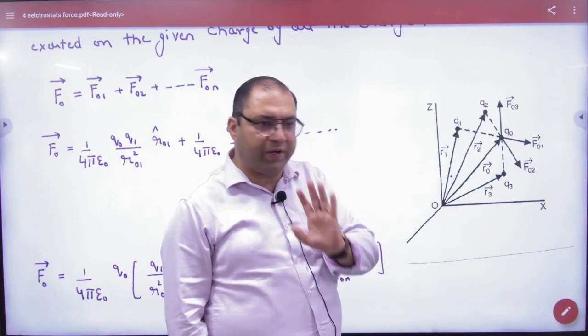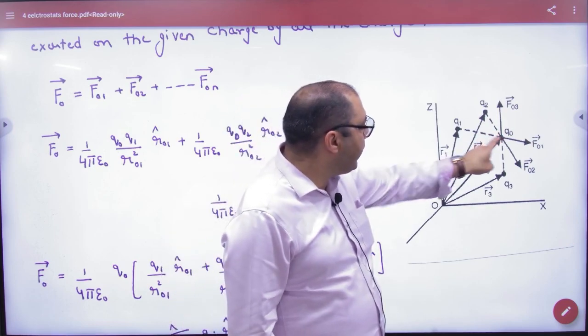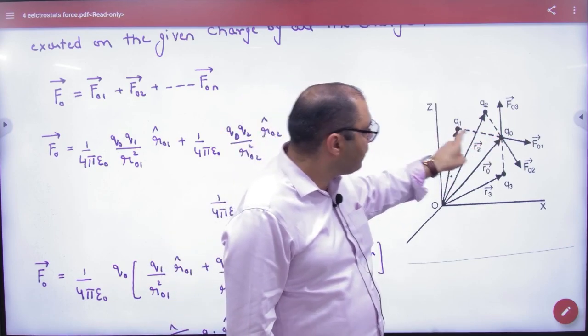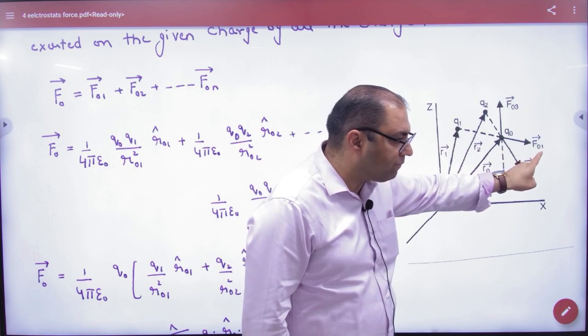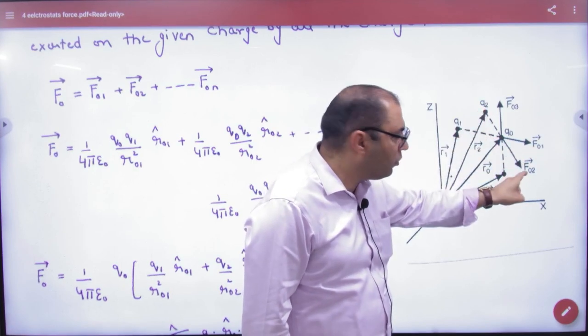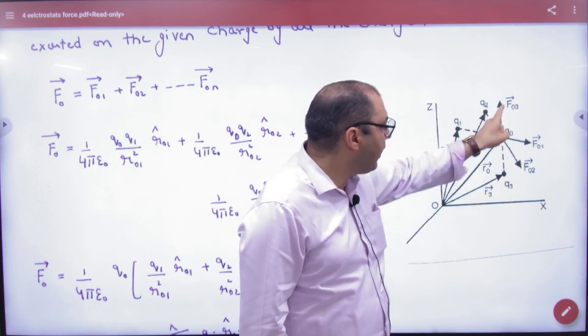And I have to find the net force on q0. So which force will be exerted by q1? How much? F01 vector. It will repel. Q0 plus second force from q2 is F02, from q3 is F03.